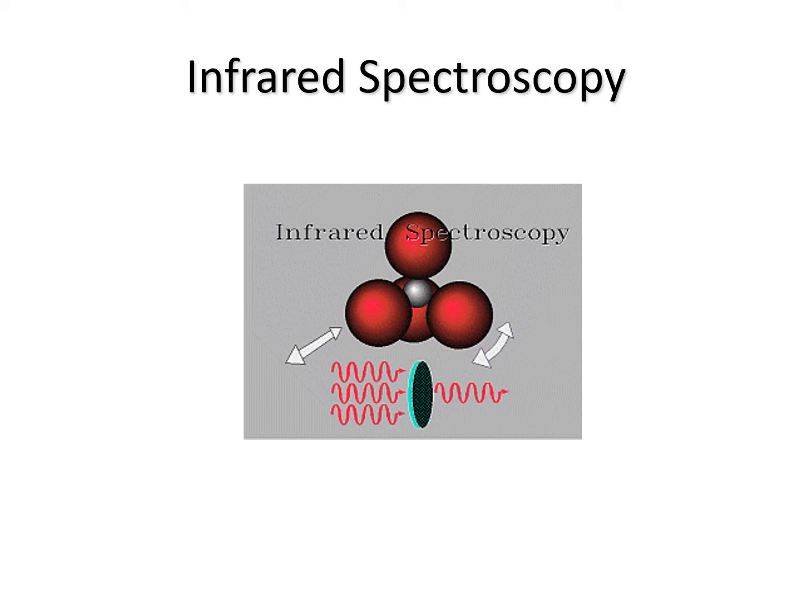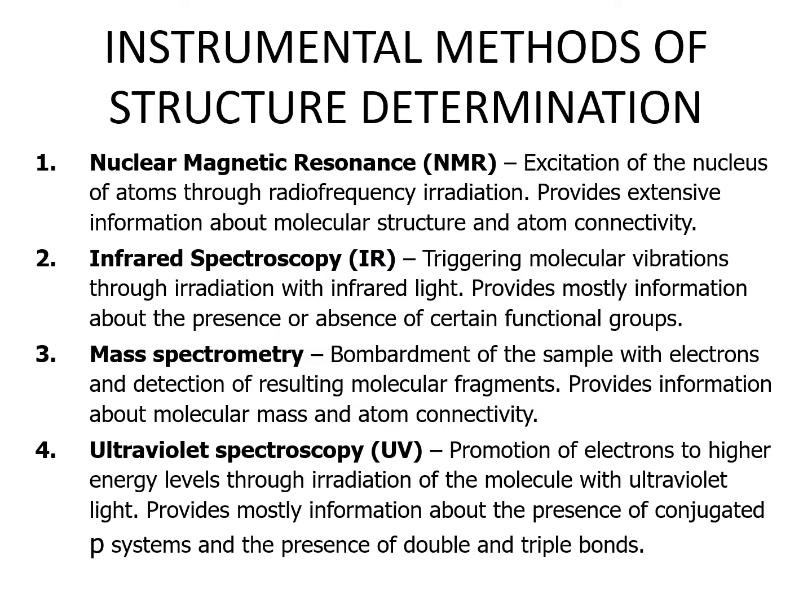Today we're going to be looking at infrared spectroscopy. The following are instrumental methods of structure determination. One of them is nuclear magnetic resonance, or NMR — the excitation of the nucleus of atoms through radiofrequency radiation — which provides extensive information about molecular structure and atom connectivity.